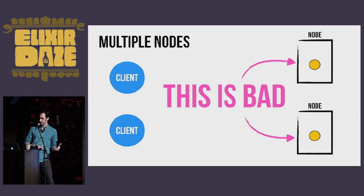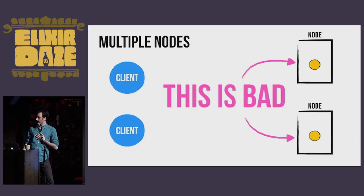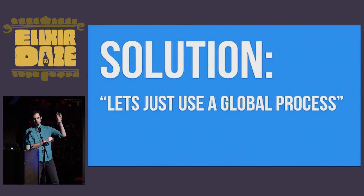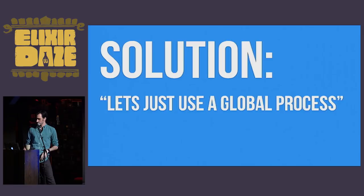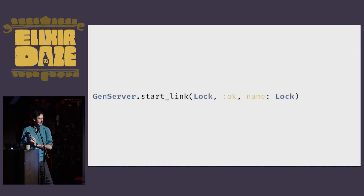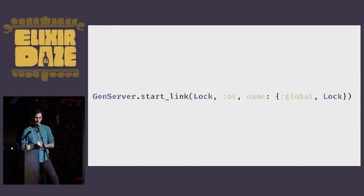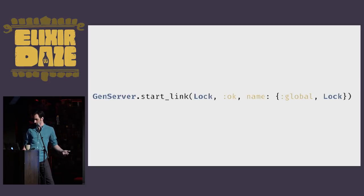The thing I see people most often do when presented with this problem is: let's just use a global process. We'll just take those two processes and make them one, so we'll always have a single lock. To do that is pretty nice — there's already a thing built into Erlang called the global registry. Our original GenServer start call would look something like this, and to make this global it's pretty easy: you just say it's global. And we could say if one doesn't exist yet, just go ahead and start it — it's guaranteed to be global, so it's fine.